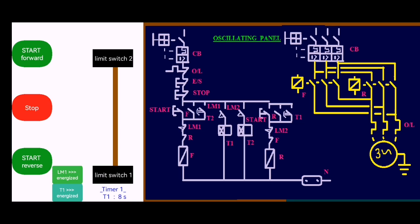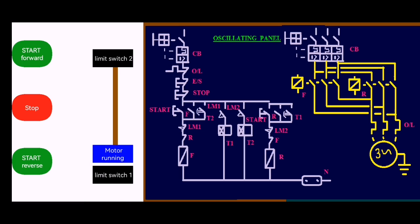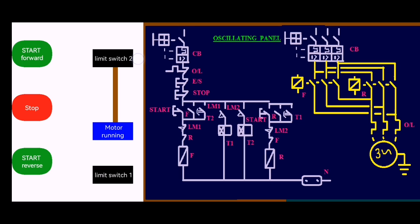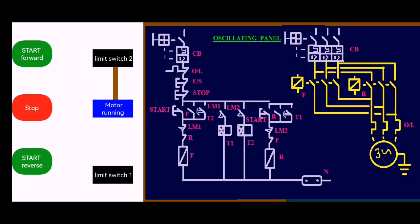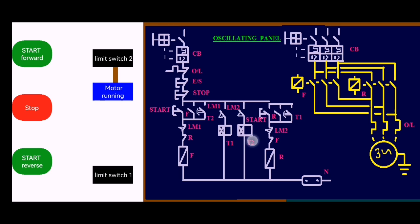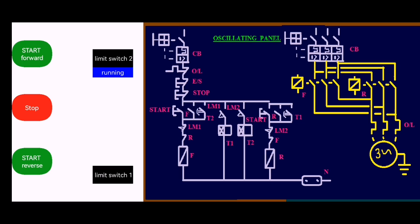While the timer is counting, when it finishes counting it closes and the motor moves to limit switch 2. When it reaches limit switch 2, it closes and Timer 2 starts to count. Here is Timer 2, starting to count for 10 seconds.